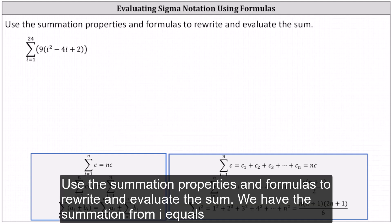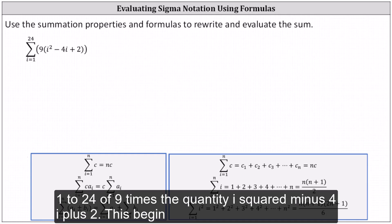Use the summation properties and formulas to rewrite and evaluate the sum. We have the summation from i equals 1 to 24 of 9 times the quantity i squared minus 4i plus 2.